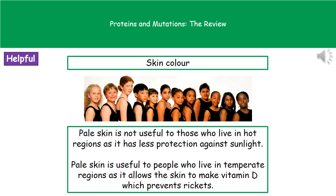Just as pale skin is useful in temperate regions, having darker skin tones is far better if you live in very hot regions with very strong sunlight, because that means you're not going to be as affected by UV radiation — darker skin has a natural protection.